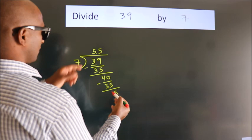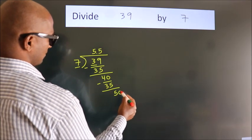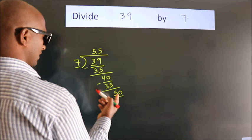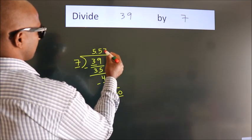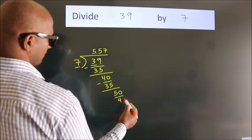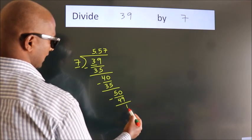After this, we already have the decimal. So directly take 0. So 50. A number close to 50 in 7 table is 7 sevens 49. Now we subtract. We get 1.